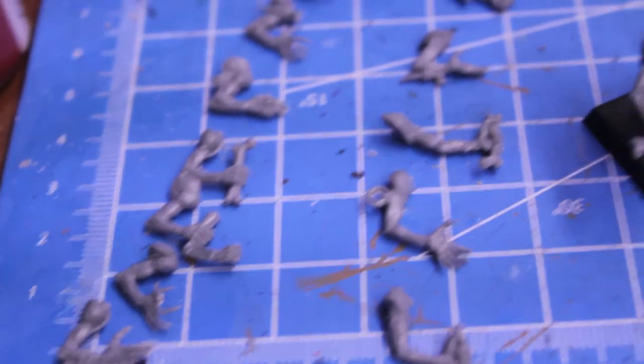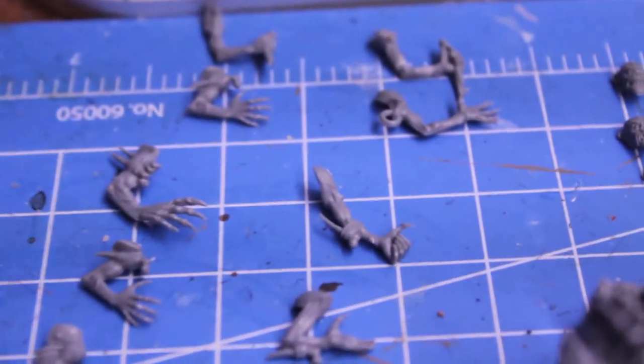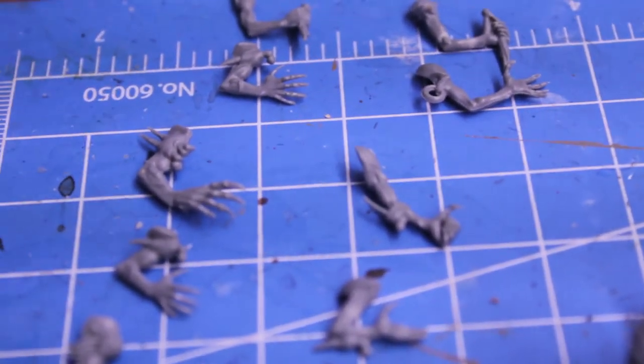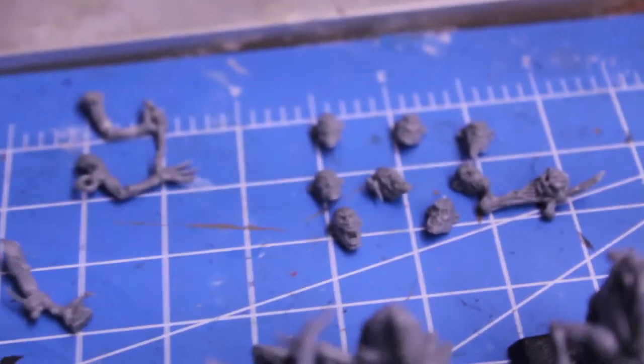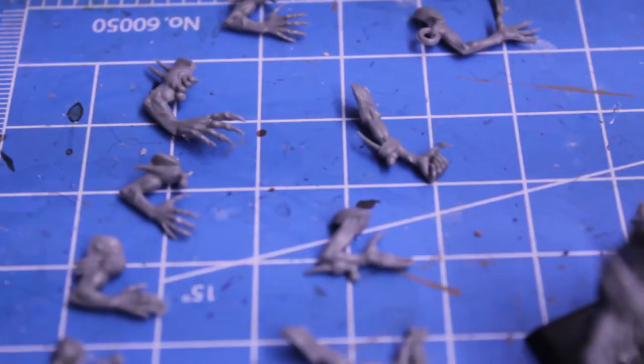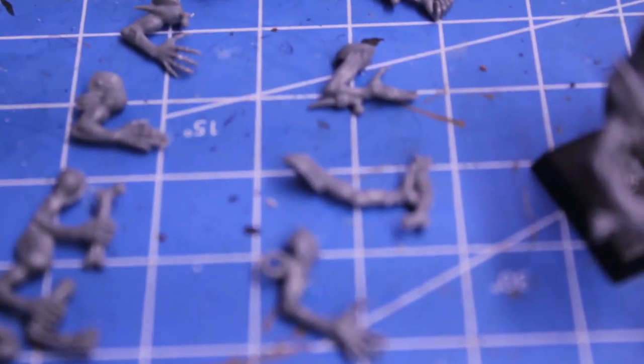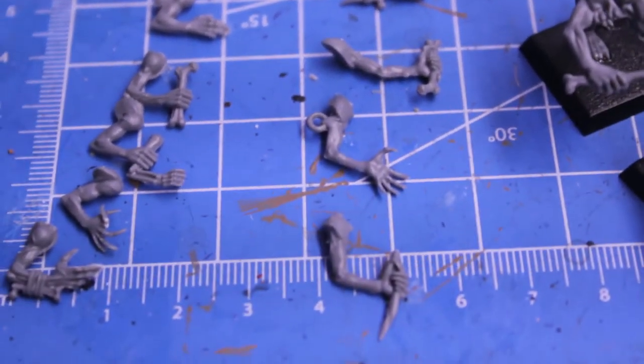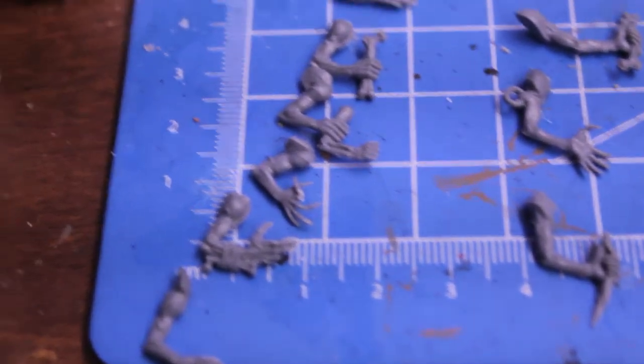So three extra right arms and seven extra pairs of arms. So you can use these arms and heads to accessorize your zombies, make them look a little bit more feral and creepy. Or you just put them in your bits box and use them for later.